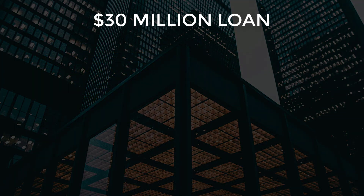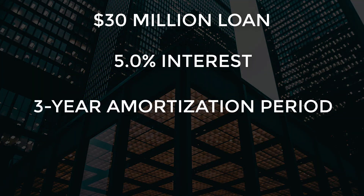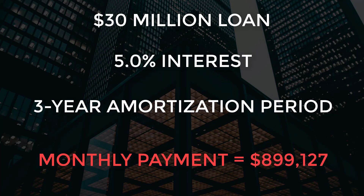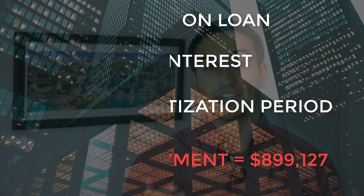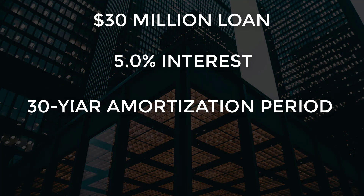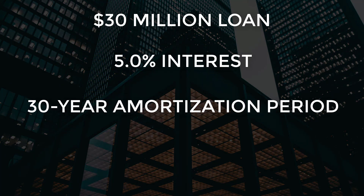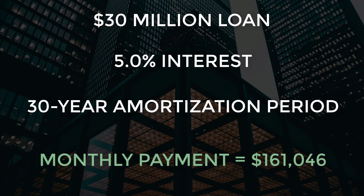Now this makes a huge difference when you're looking at calculating your monthly loan payments. For a big commercial real estate deal, a $30 million loan is a very realistic loan amount. And if that loan is at 5% interest and is paid off on a three year payback schedule, that monthly payment is going to be almost $900,000 a month, which is not good for investor cash flow. But when you change that to a 30 year amortization or payback period, what you get is a loan payment of $160,000 a month, which is much more reasonable and manageable for that borrower.